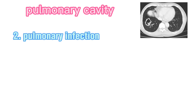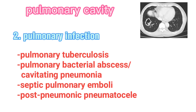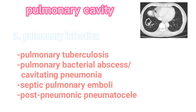Pulmonary infection, which are most commonly due to pulmonary tuberculosis, pulmonary bacterial abscess, cavitating pneumonia, septic pulmonary emboli, and post-pneumonic pneumatocele. A thin-walled pneumatocele is not really a cavity, but when infected can be thick-walled.